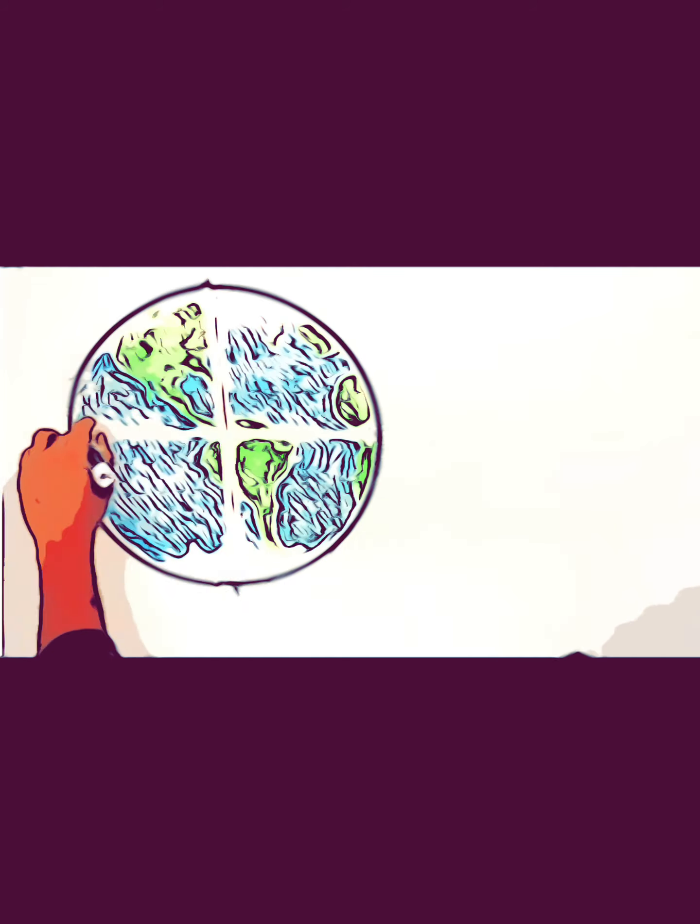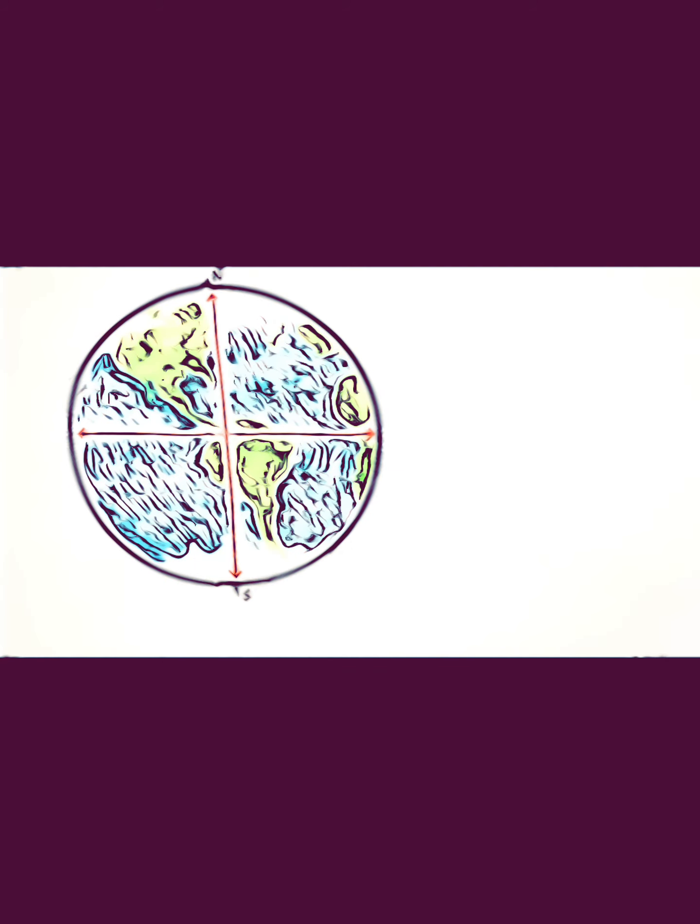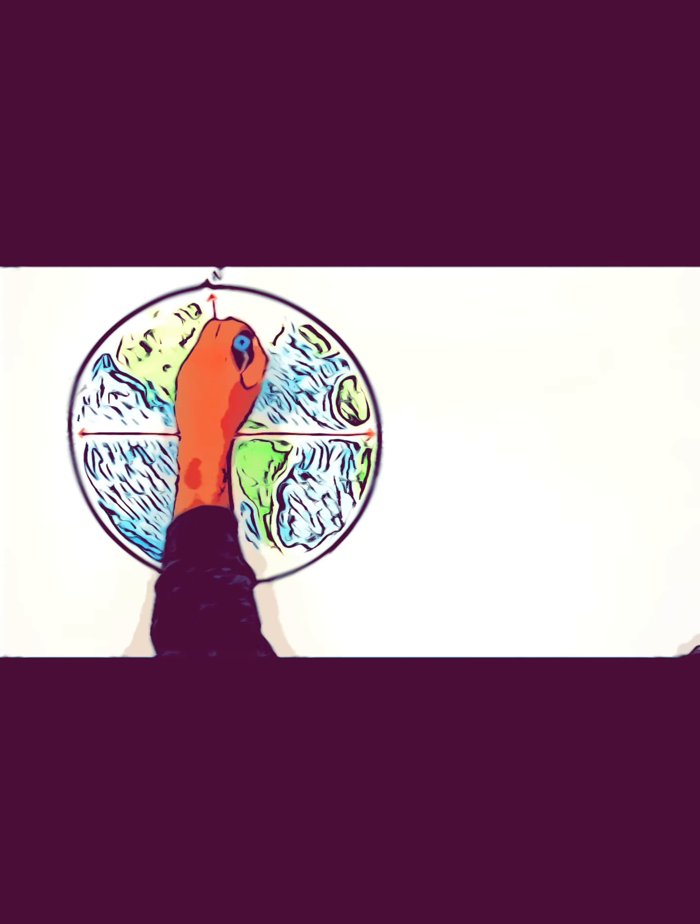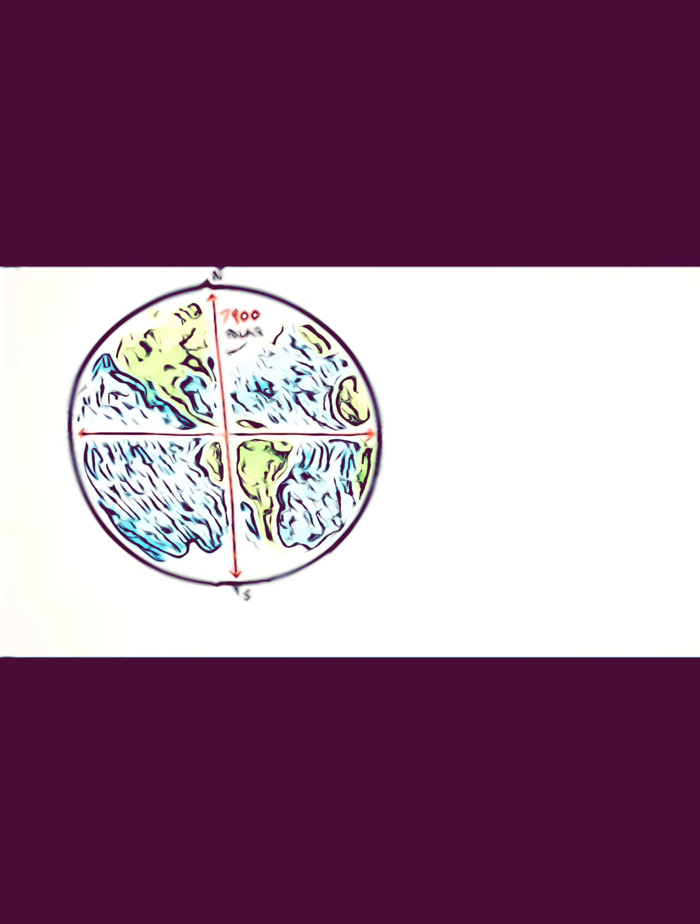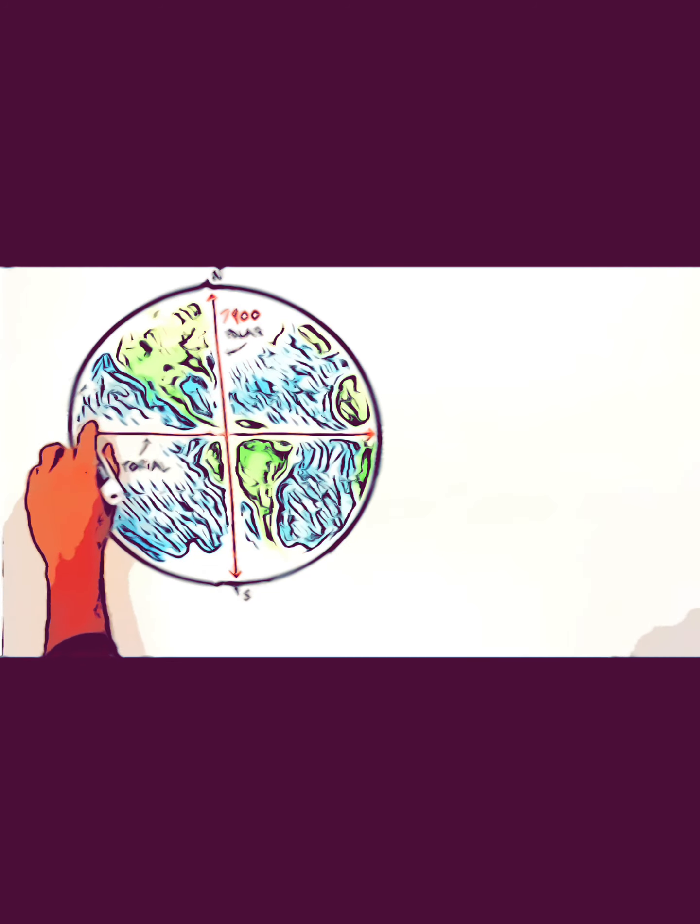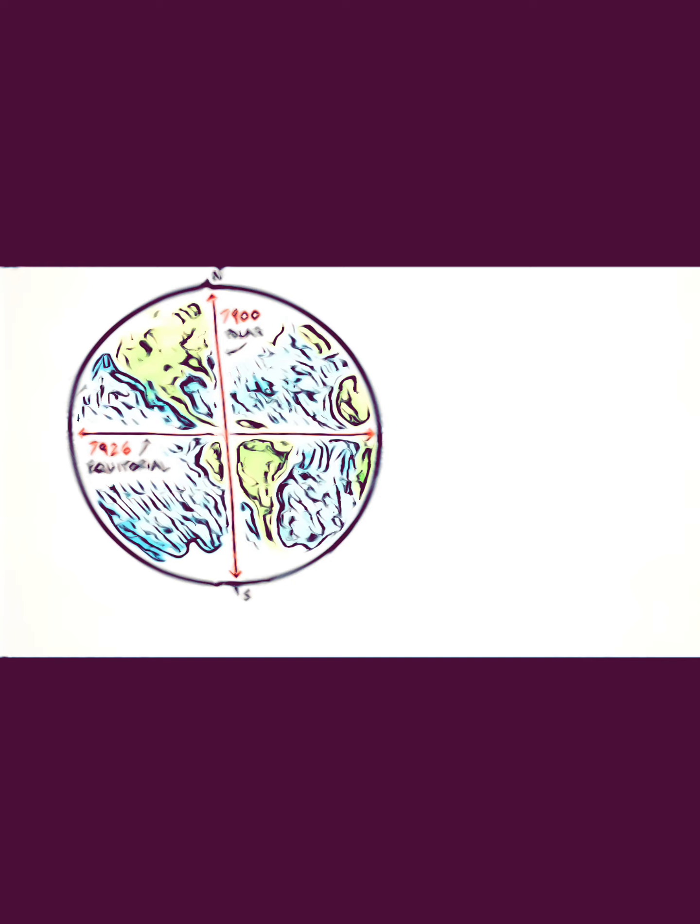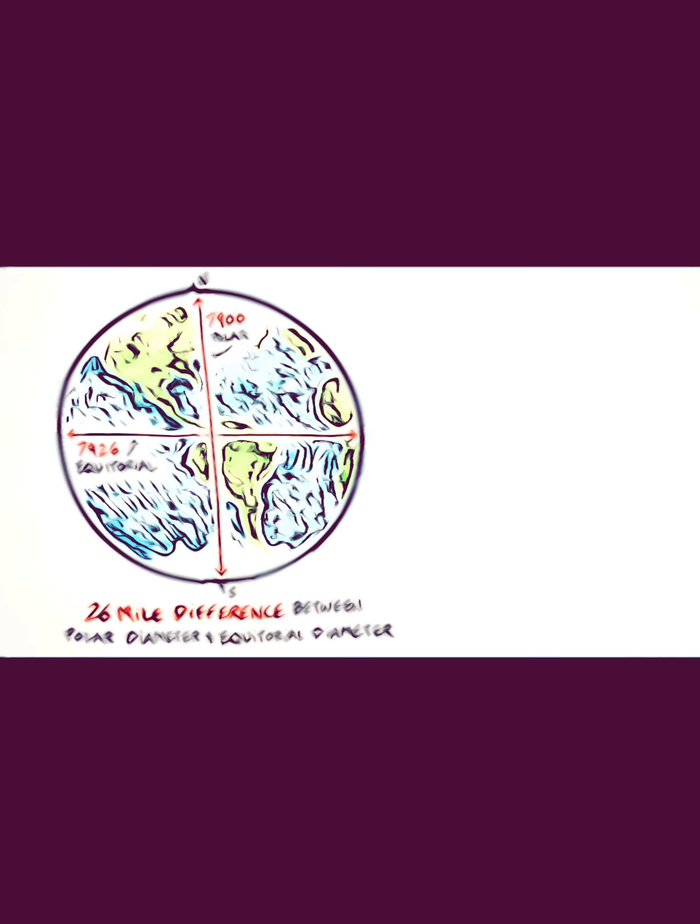The Earth's spinning on its axis creates a difference between the polar diameter of 7,899 miles (round number 7,900) and the equatorial diameter of 7,926 miles—a 26-mile difference. Thank you for that bulge, because life on Earth would be chaotic without it.